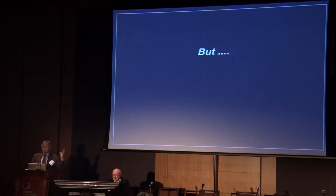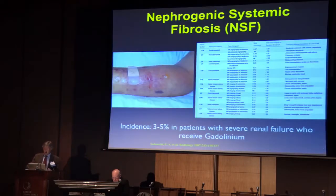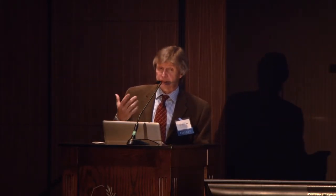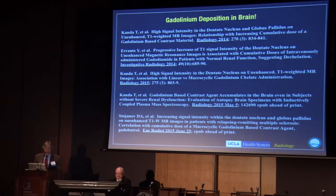We've used these contrast-enhanced techniques for years with gadolinium, but there have been some issues. Back in about 2006, NSF — nephrogenic systemic fibrosis — became recognized as a problem in patients with severe renal failure exposed to gadolinium. In some instances the rate of NSF was 3% to 5%, which was unacceptable. We've taken precautions and are now very cautious about using gadolinium in patients with renal failure. More recently, there have been observations of gadolinium deposition in the brain of patients with normal renal function, generating a whole new bout of controversy.